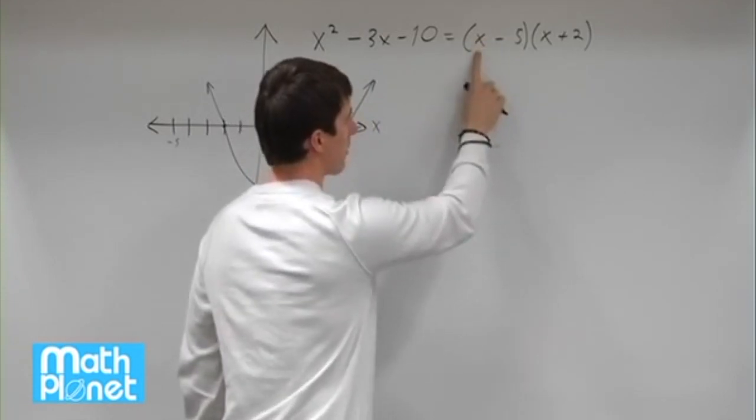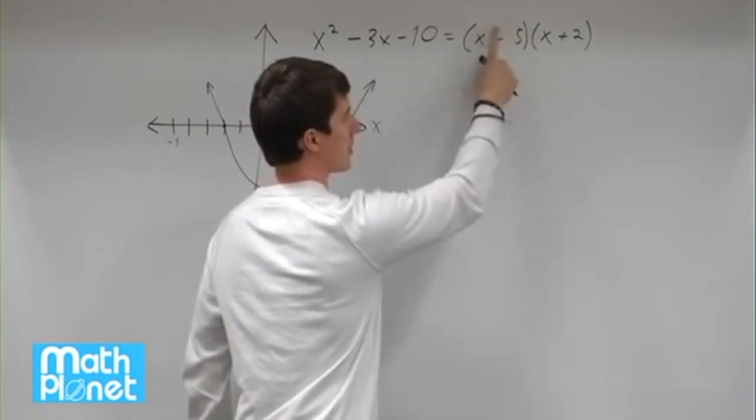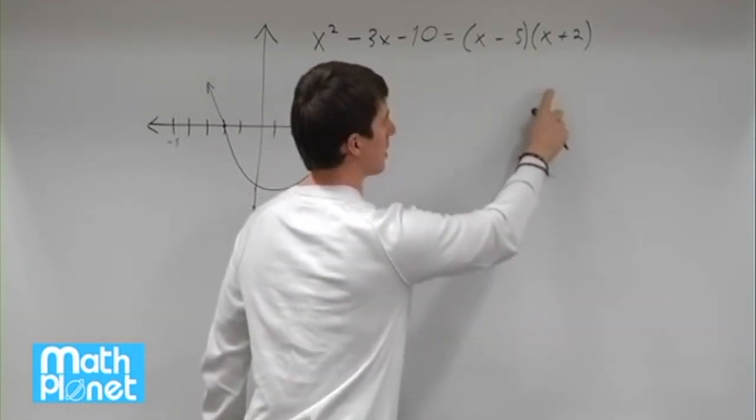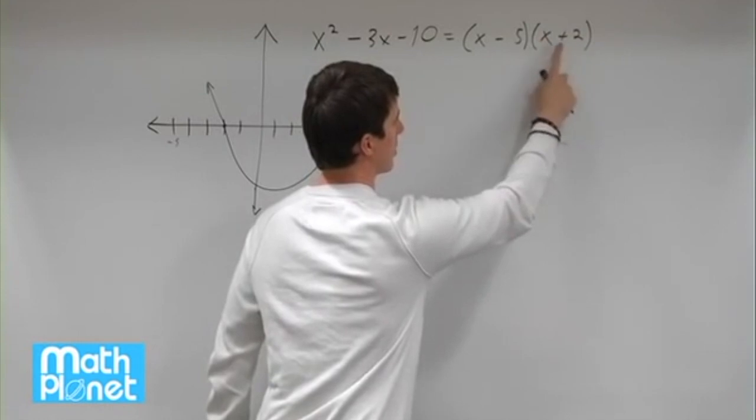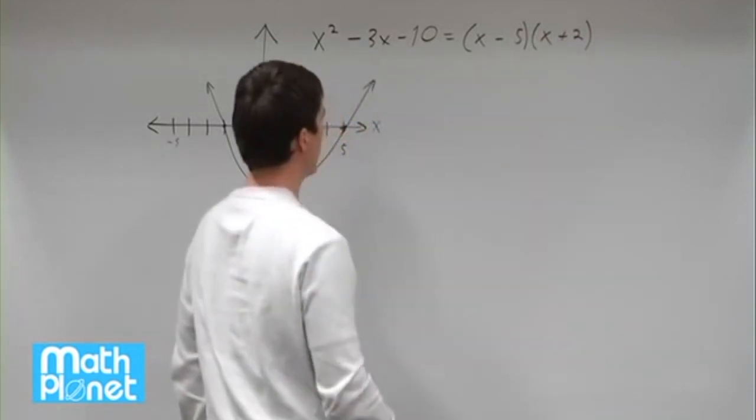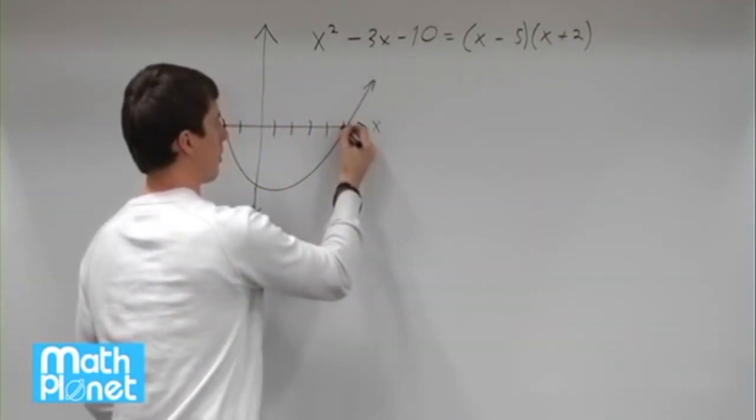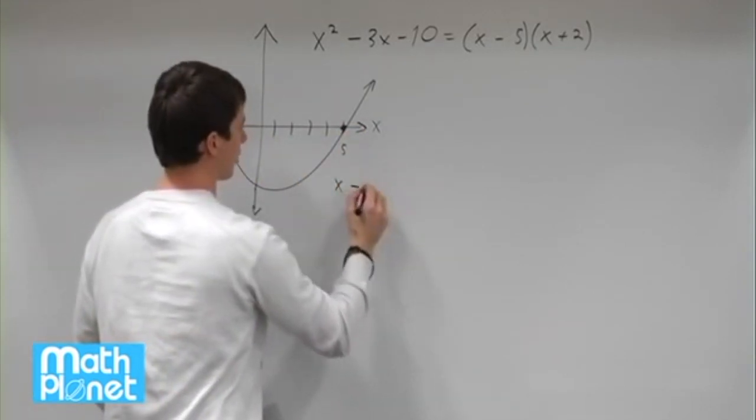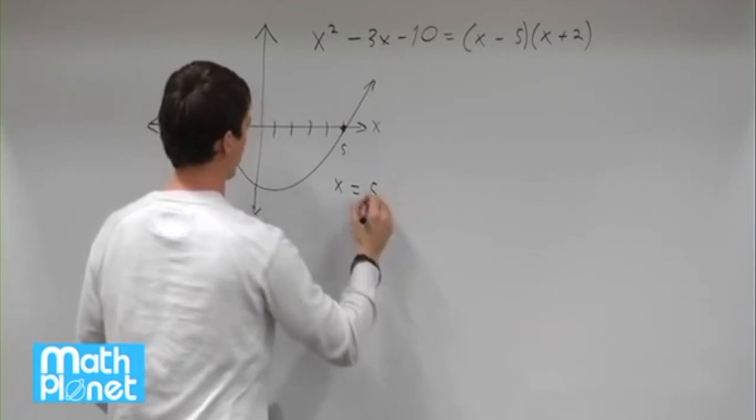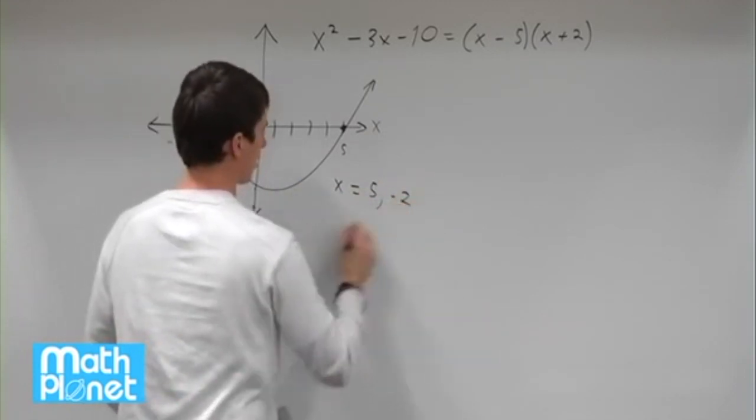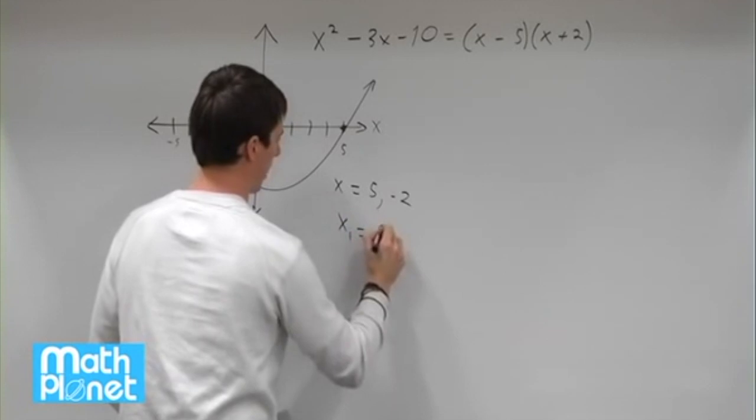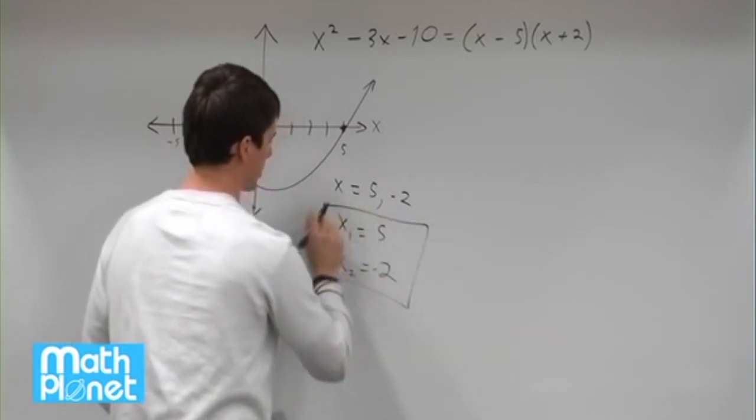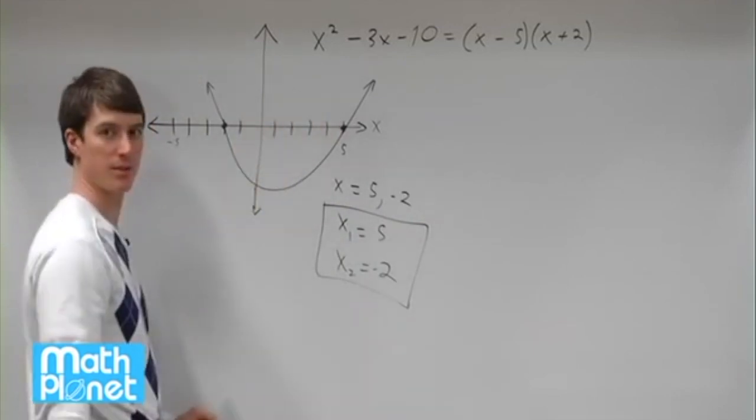If we plug in positive 5 here, that will give us 0 for this term and therefore 0 times something else is going to be 0. Again, negative 2 here gives us negative 2 plus 2 is 0. 0 times something else gives us 0. So our two answers are just these two points where we cross this x-axis at x equals positive 5 and x equals negative 2. So we can also write that as x₁ equals 5 and x₂ equals negative 2 just to be clear. So those are our two answers graphically and from factorizing.